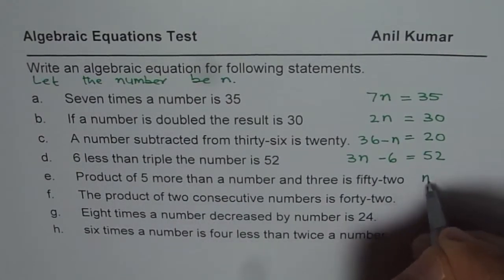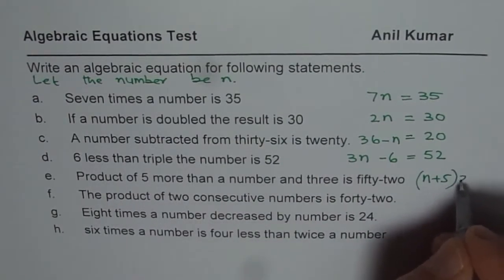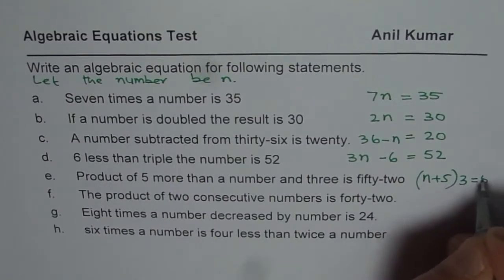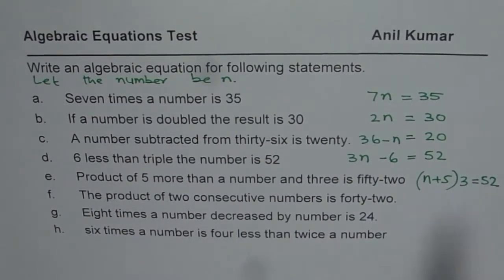Product means multiply. So product of 5 more than a number and 3 is 52. So product of 5 more than a number and 3, so when you multiply these two, you should get 52. That is the whole idea.